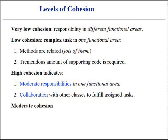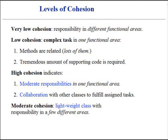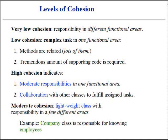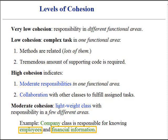Moderate cohesion is common in a lightweight class with sole responsibilities in a few different areas. The areas are related to the class concept in a logical manner, but not to each other. For example, consider a class called Company, which is completely responsible for knowing its employees and also knowing its financial information. The two areas are not strongly related to each other, but both company and its employees have logical relevance to the same concept — the company or organization. The total number of public methods in both classes is small, as is the amount of code supporting each method implementation.